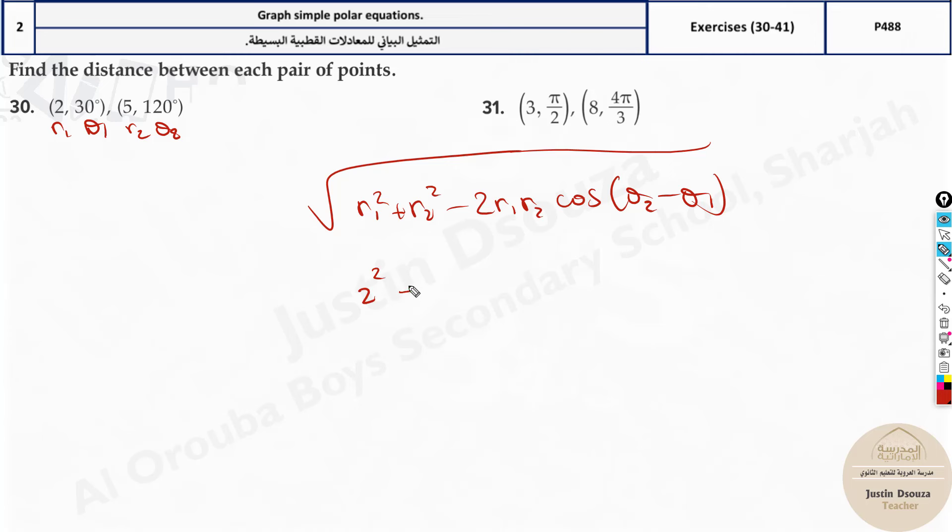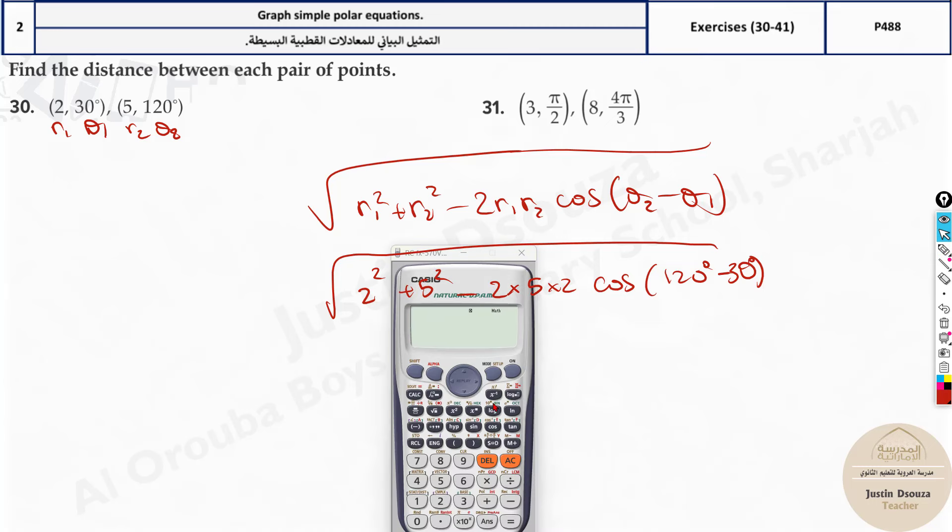2 squared plus 5 squared minus 2 times 5 times 2—I've just taken the other way, you're multiplying, it's fine—times cos of 120 degrees minus 30 degrees, and put this inside the square root. Take out your calculators and solve this up. It will be square root, this is the symbol.